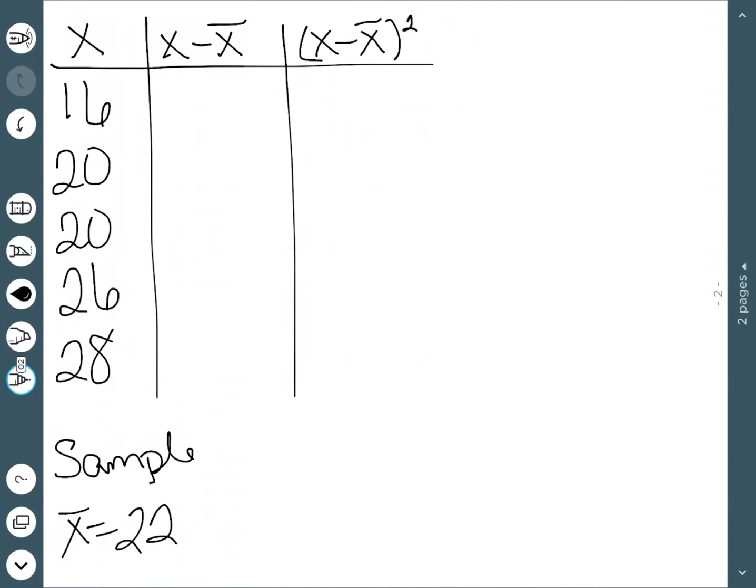The mean is still 22, so we have 16 minus 22 is negative 6. 20 minus 22 is negative 2, 20 minus 22 is negative 2, 26 minus 22 is 4, and 28 minus 22 is 6.